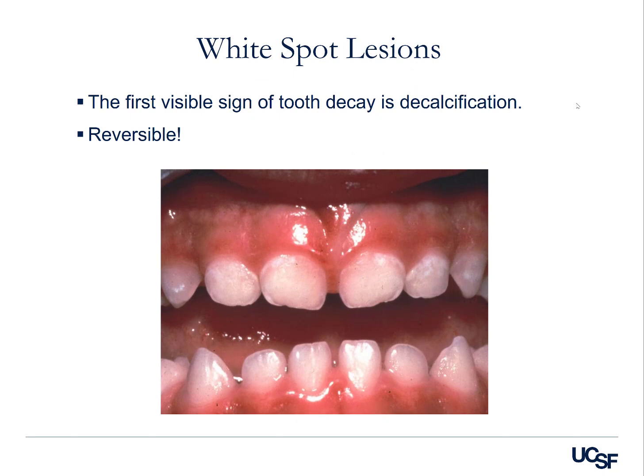The first visible sign of tooth decay is decalcification — a chalky white appearance on the upper primary incisors along the gingiva. This is early incipient caries, meaning it can be a reversible process. We can keep the teeth clean with improved oral hygiene and brush with fluoride toothpaste. The use of fluoride can remineralize incipient caries by re-uptake of calcium and phosphate ionic saliva, creating a harder layer so that the caries is arrested. If not treated, it would worsen and become cavitated, requiring a filling.